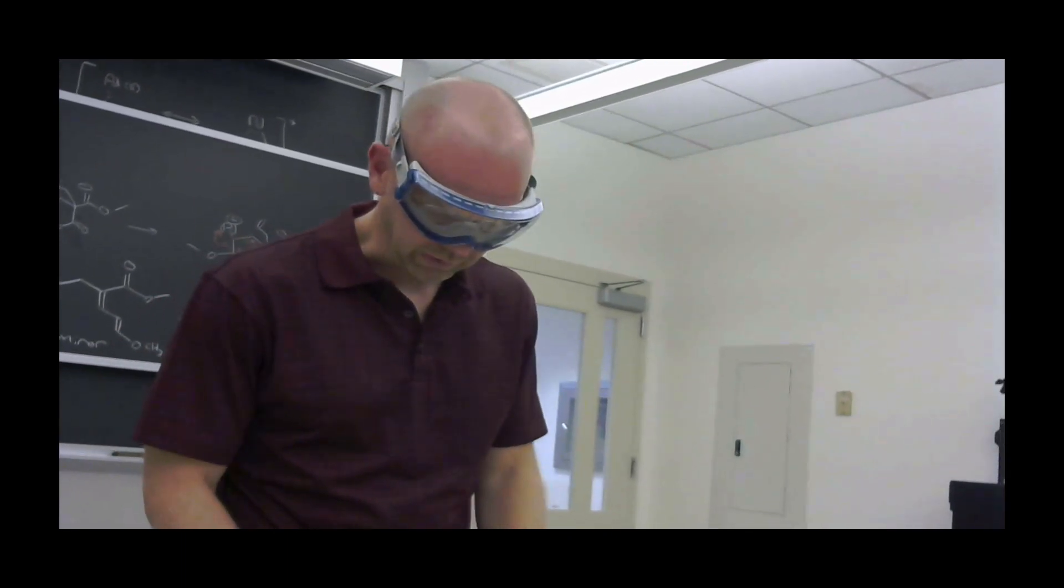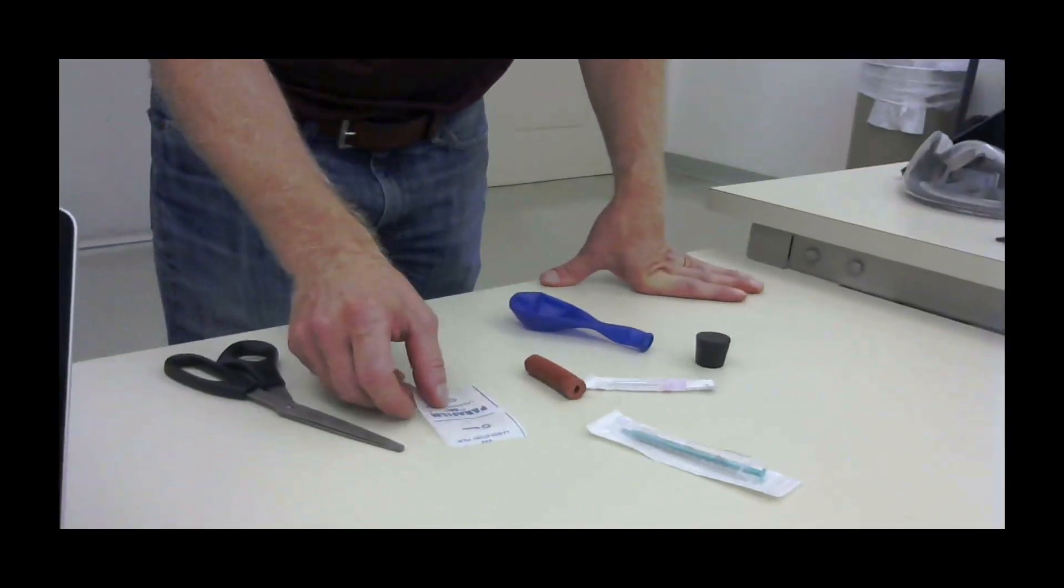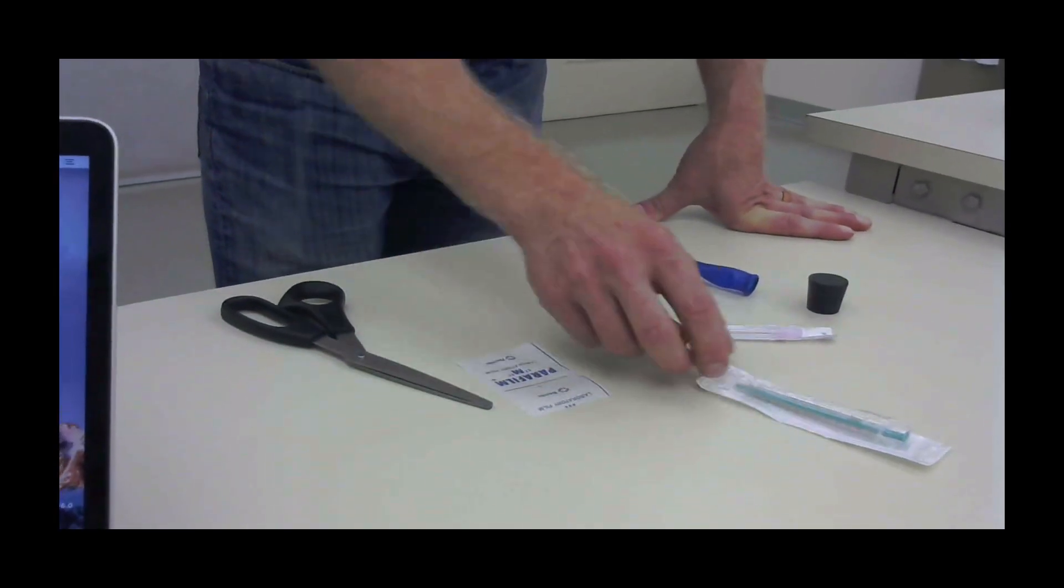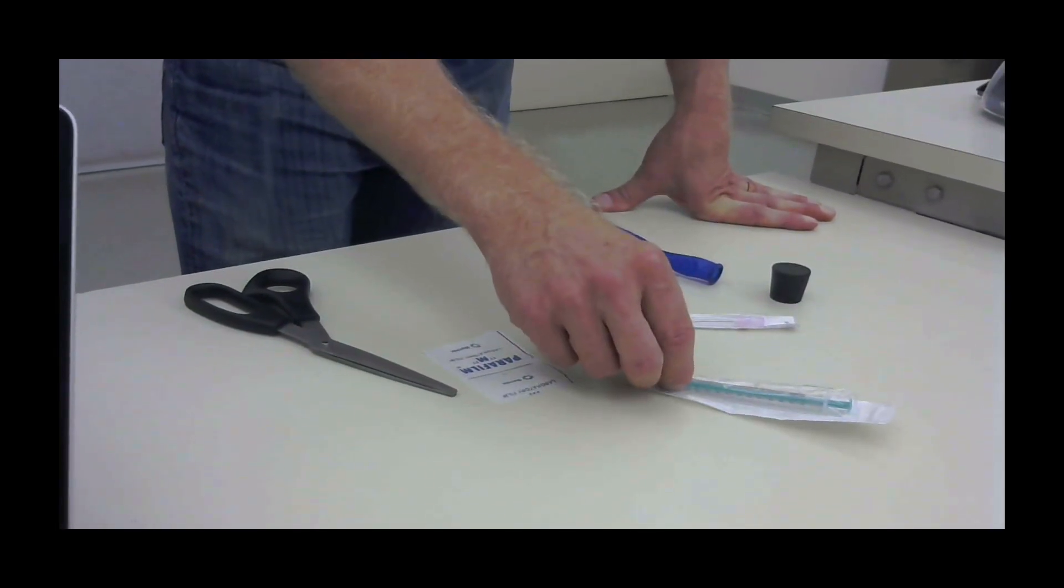So now we're going to refocus the camera on the materials that you need. You need a piece of parafilm, maybe about two inches long, a one milliliter syringe,